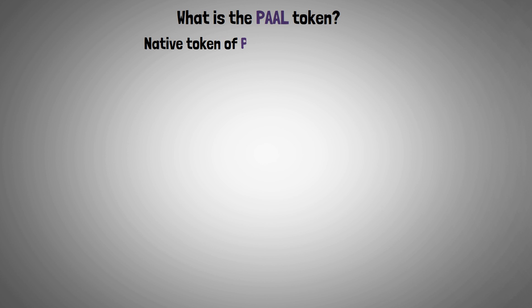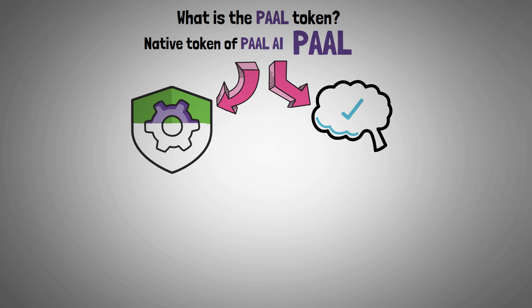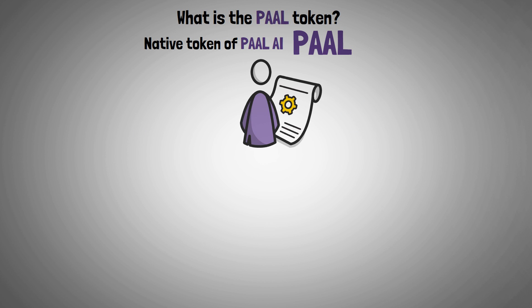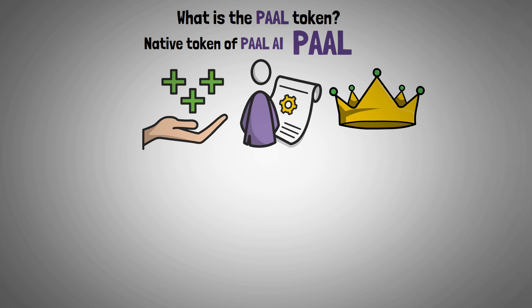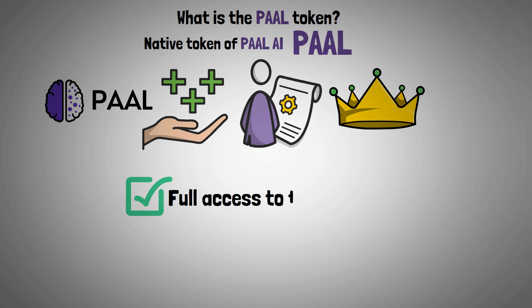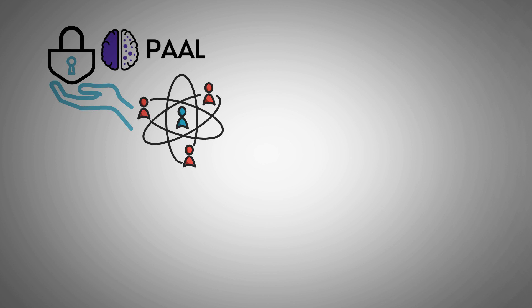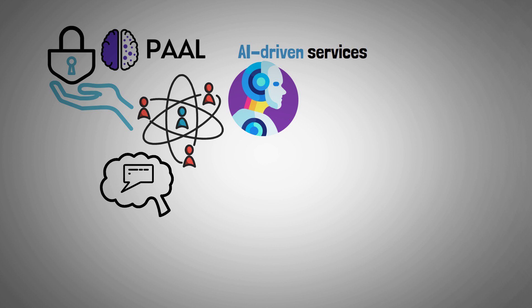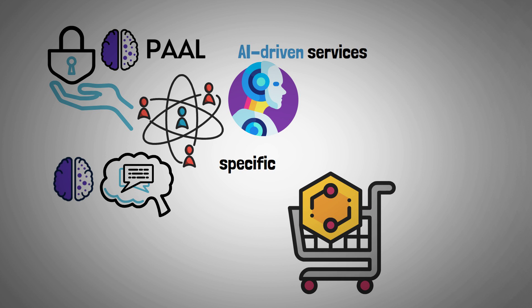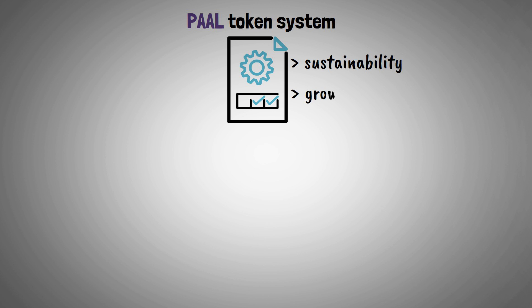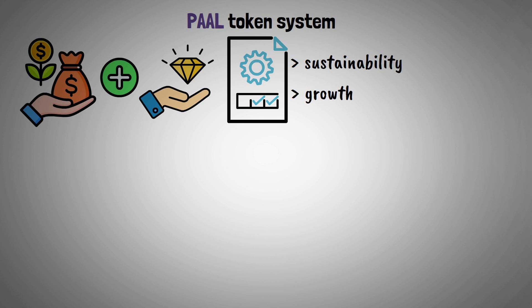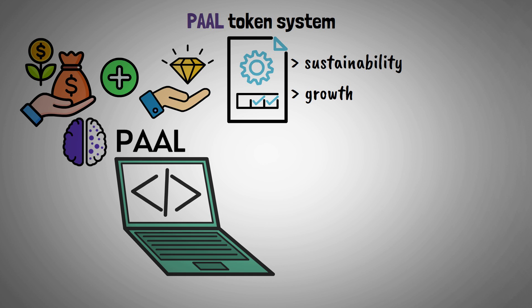Finally, let's examine what the Paul token is. The native token of Paul AI, known as Paul, is a means of accessing and interacting with the platform and is used to support the ecosystem. This token grants users exclusive rights and advantages within the platform's ecosystem, providing full access to the platform's functions. Users can guarantee ongoing access to AI-driven services and personalized responses by purchasing a predetermined quantity of these tokens. The Paul token system is designed to guarantee sustainability and growth, while also serving as a source of funding for the Paul AI platform's ongoing development and expansion.